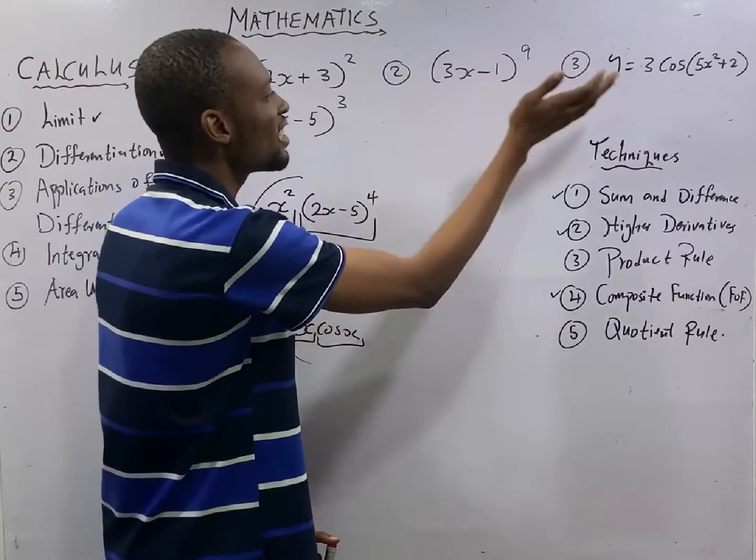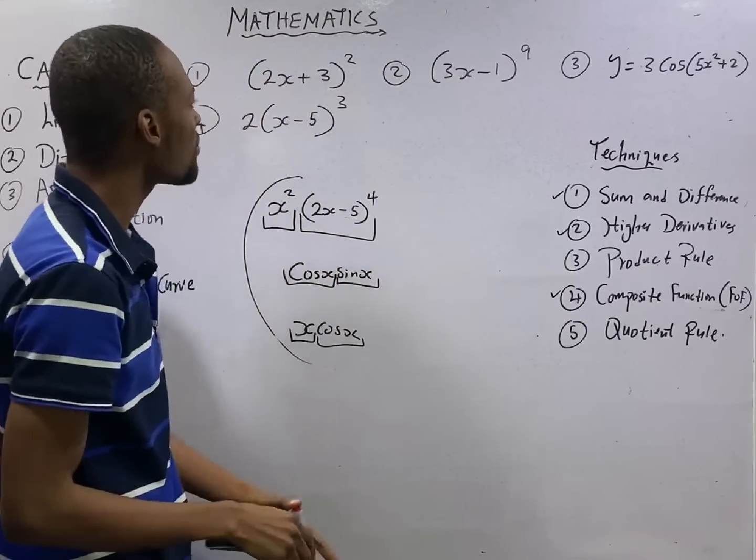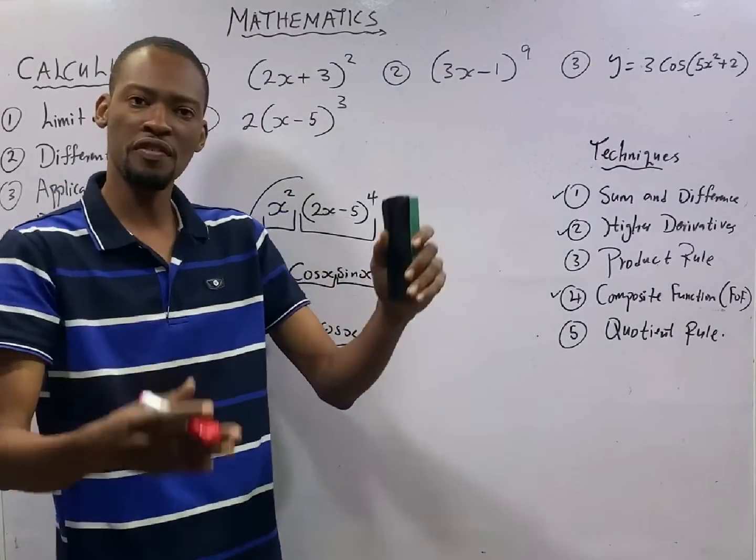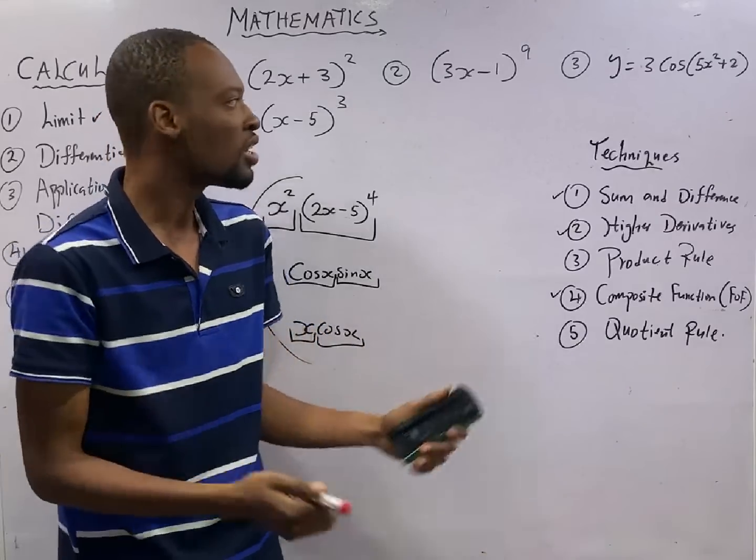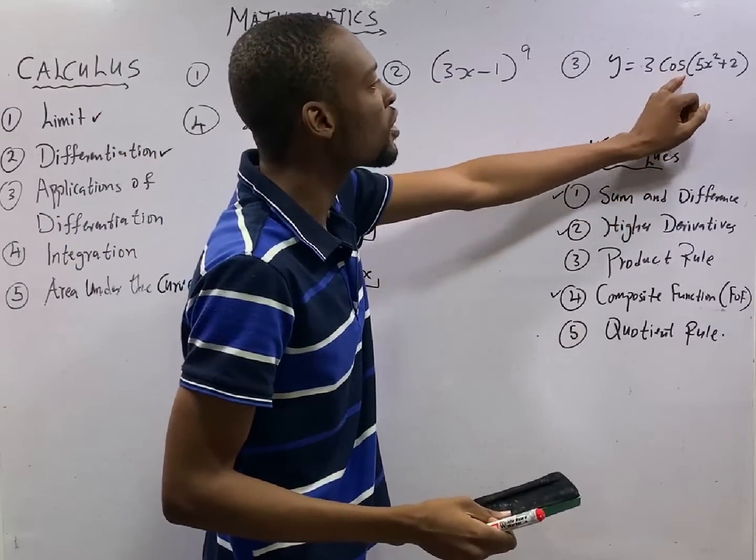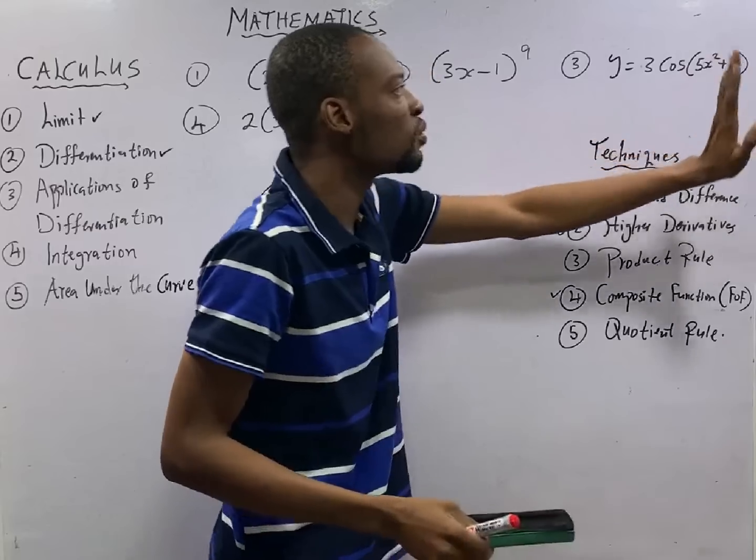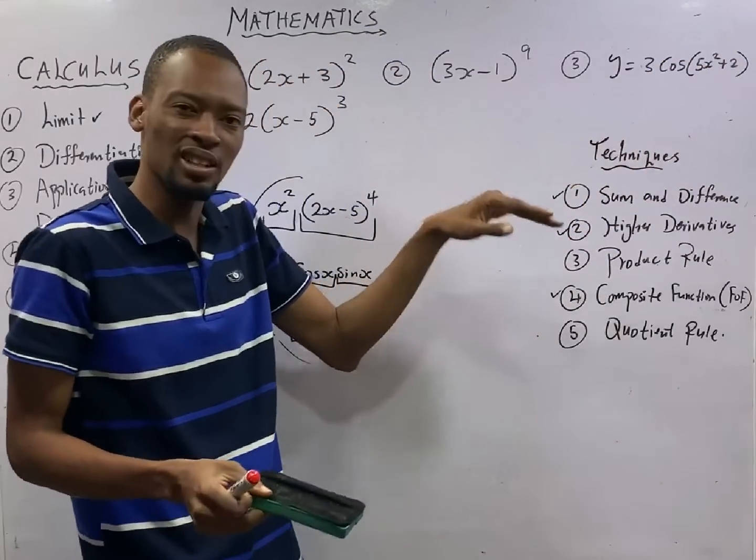But looking at here, here, here, and here, you cannot tell me that you can bring out two different functions that can stand on their own. Even here, if you remove 5 square plus 2, then what is cos what? So cos cannot stand alone.